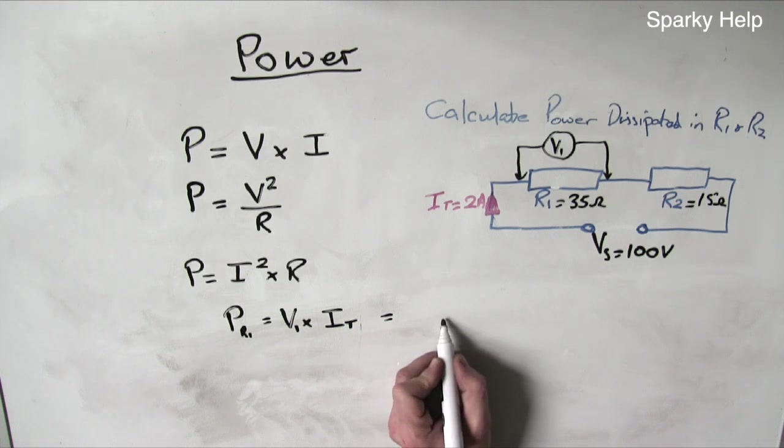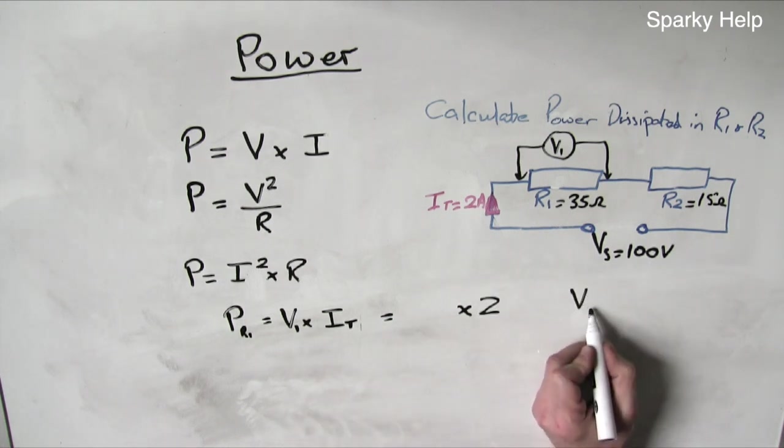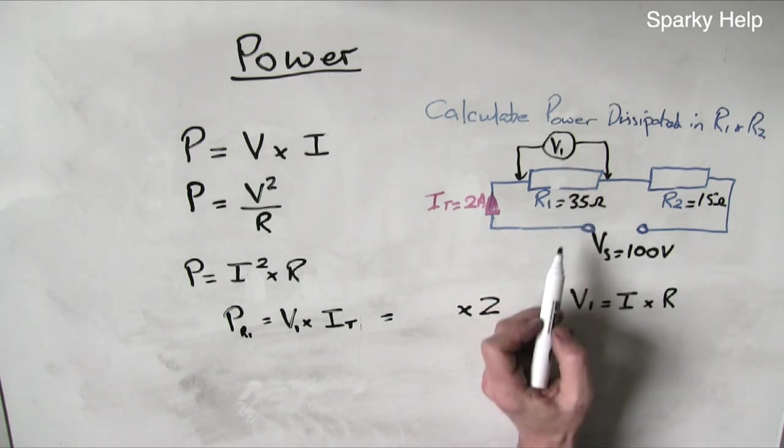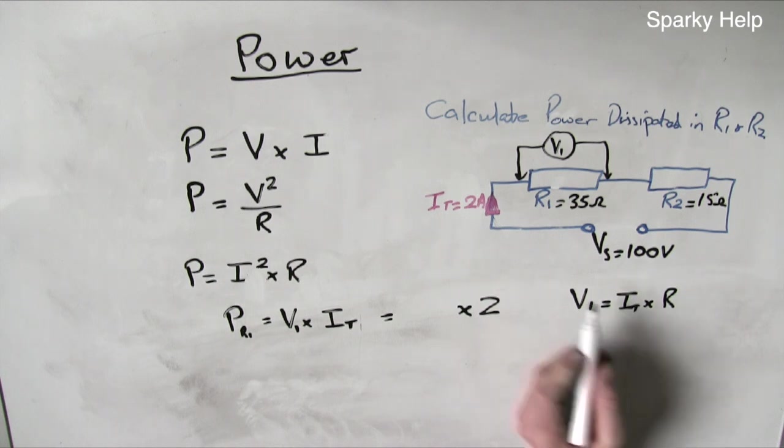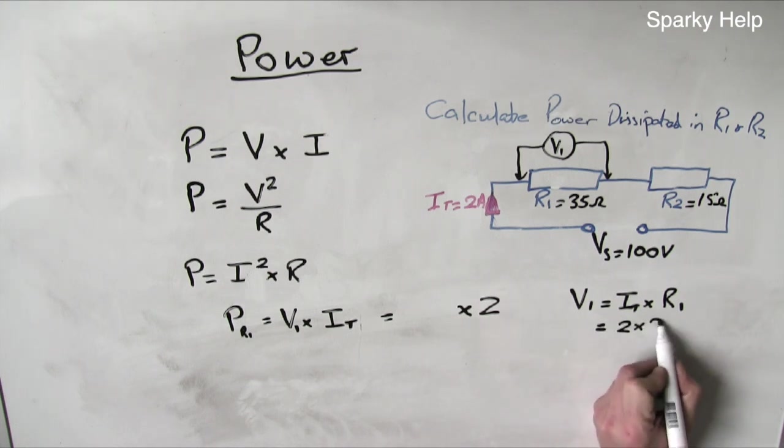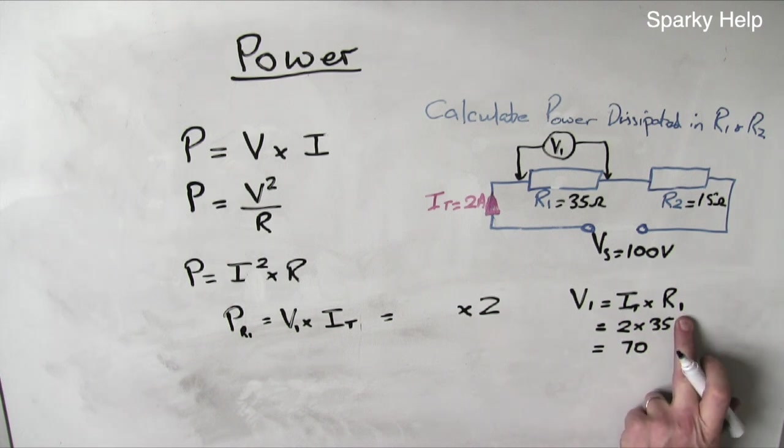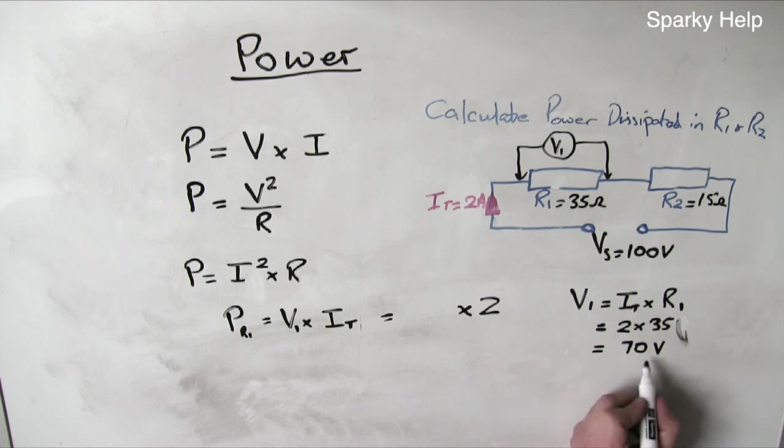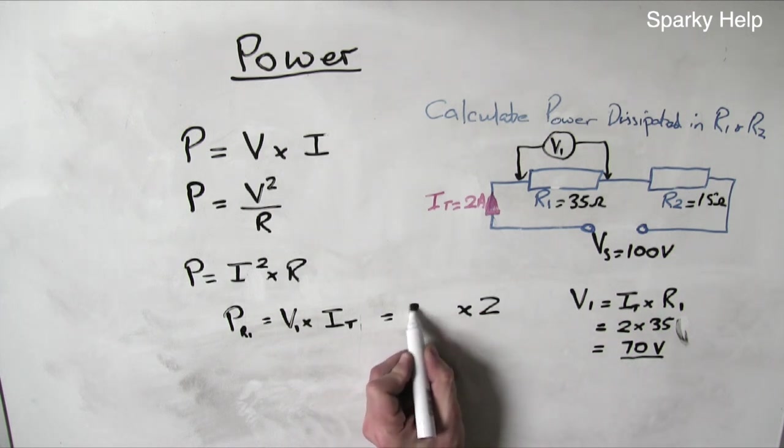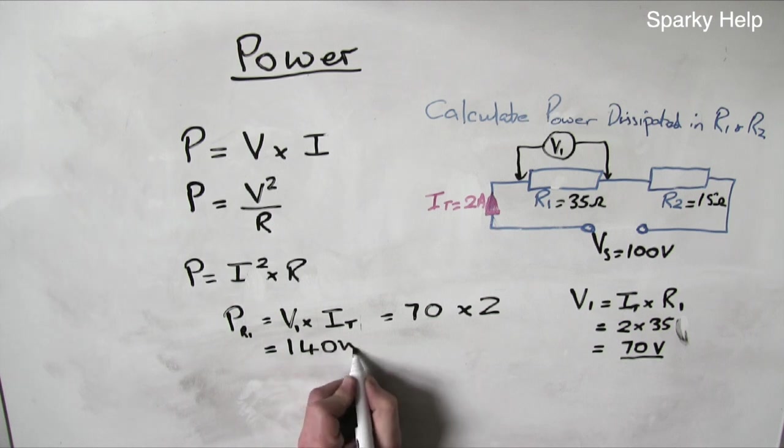So there is an unknown voltage. We don't know that at the moment. But whatever it is, it will be multiplied by 2. So we've got to find V1. So from Ohm's law, V1 is equal to I times R. So to find V1, it is the current passing through that resistor, IT, times the resistance of that resistor, which is 1. And therefore 2 times 35 is 70 volts. So we now know our voltage is 70 volts, so that we can put this in over here. So 2 times 70 equals 140 watts.